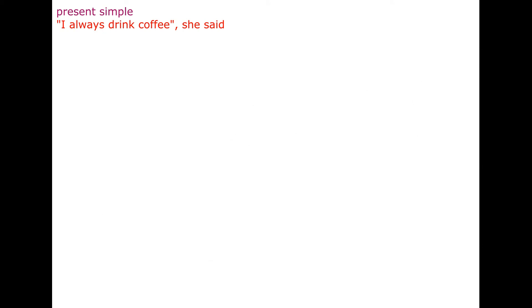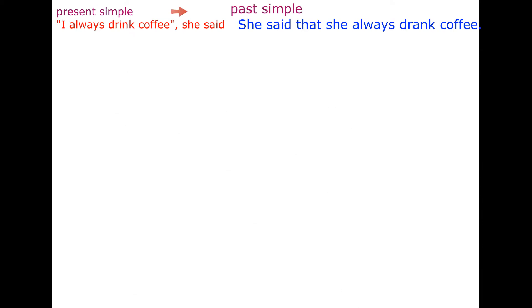Let's have a look. Present simple: 'I always drink coffee,' she said. She said that she always drank coffee.